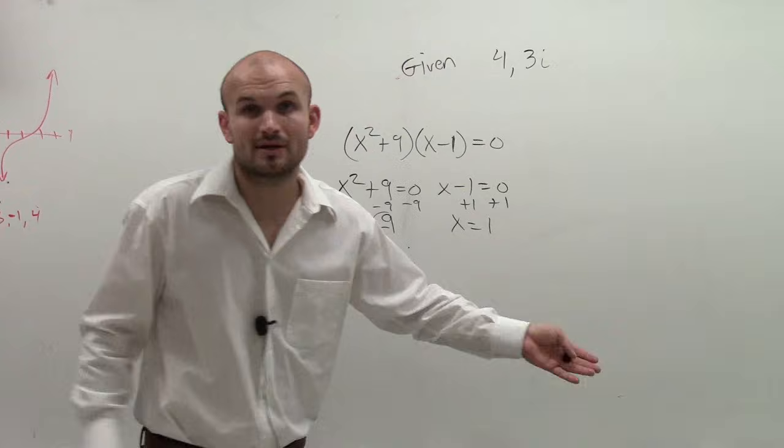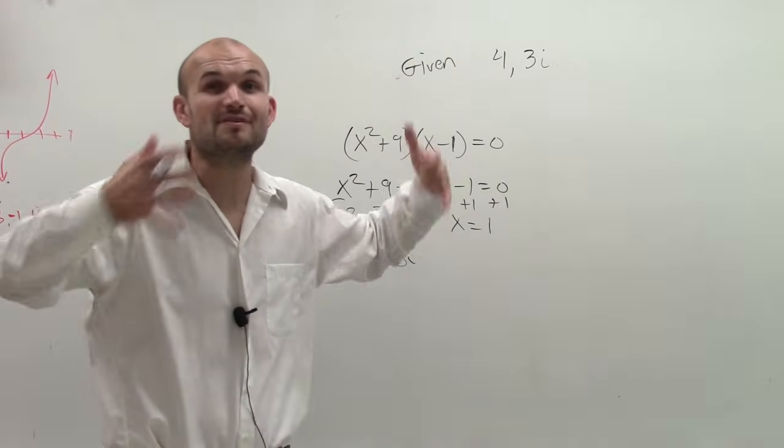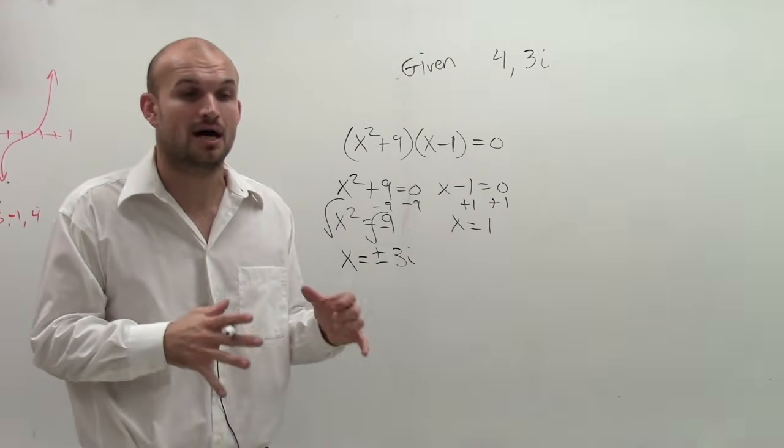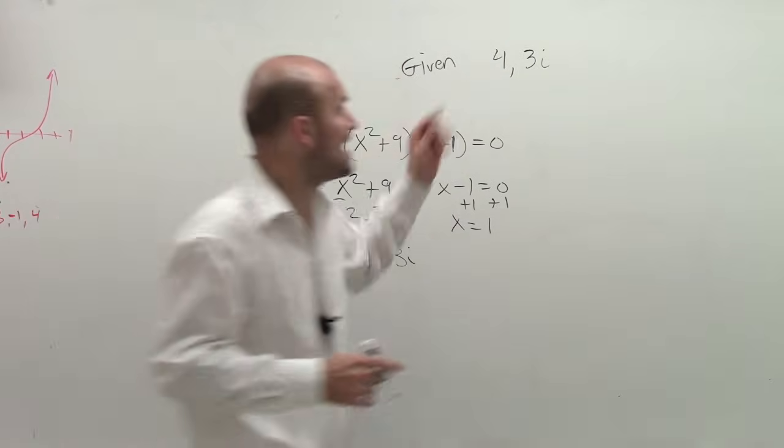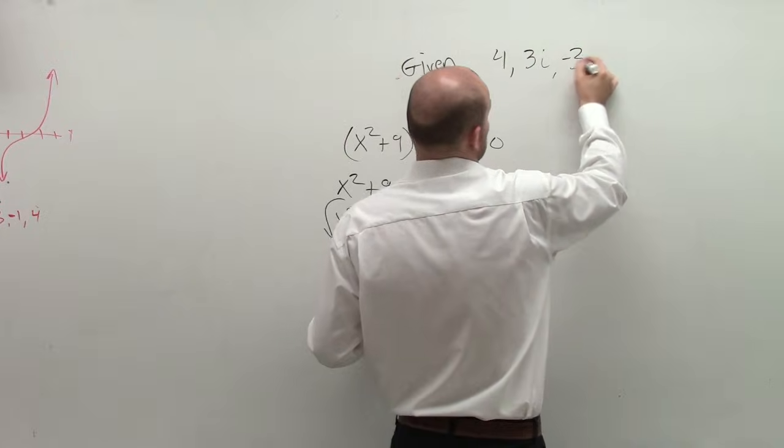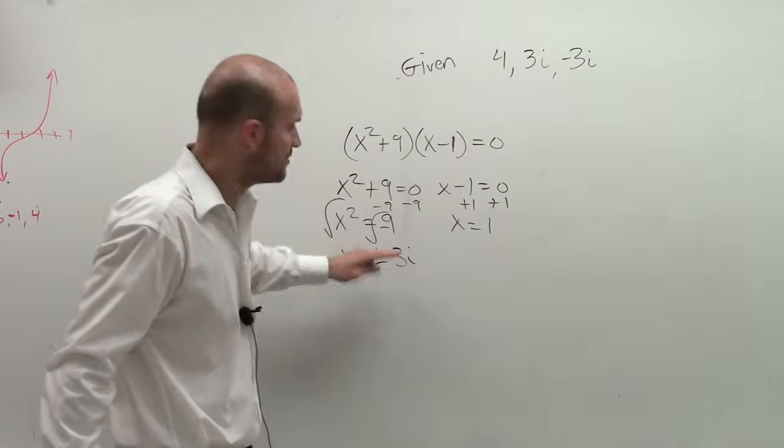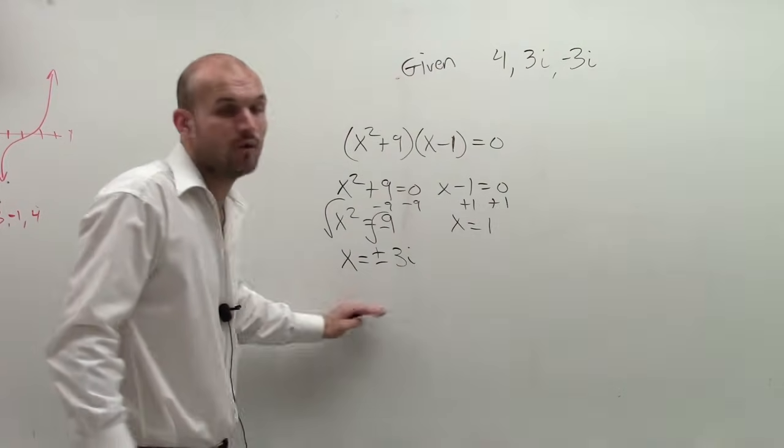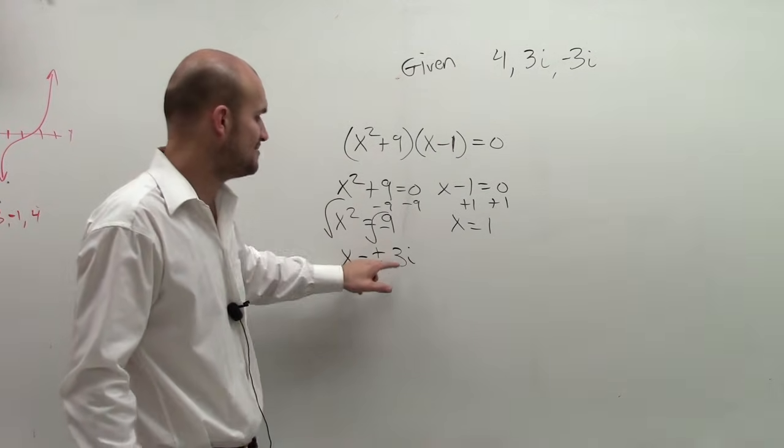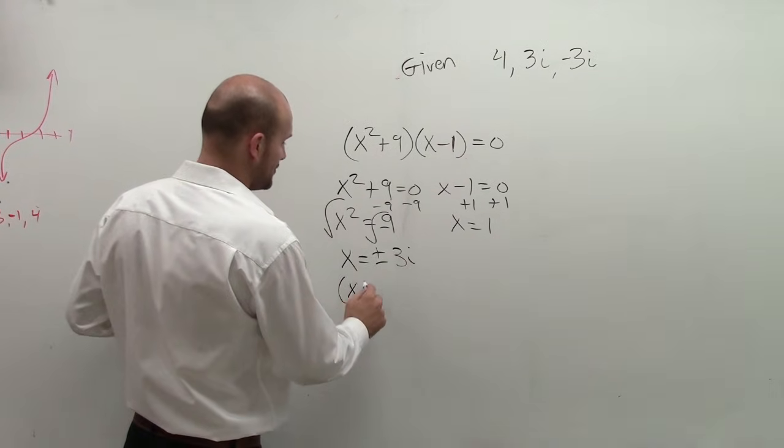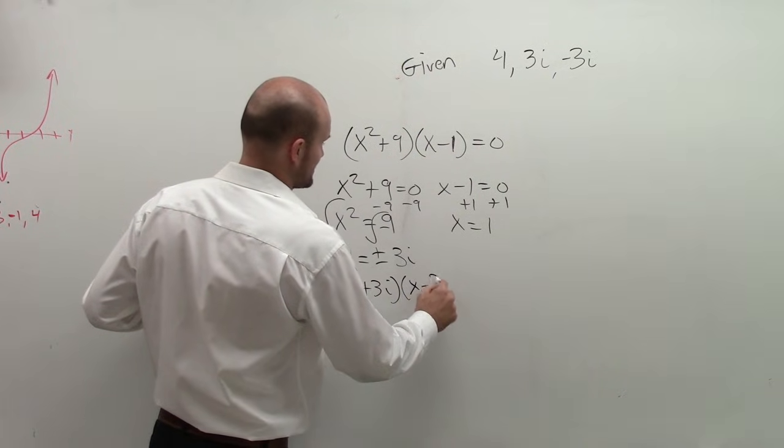I give you 4 comma 3i. Well, remember, if you're given one complex number, if you're given one imaginary number as a root, you have to include the opposite value. Because remember, when we take the square root to find the zero, it's always going to be plus or minus. So notice, I'm going to have both of these be my zeroes, meaning I can write both of these as factors like this.